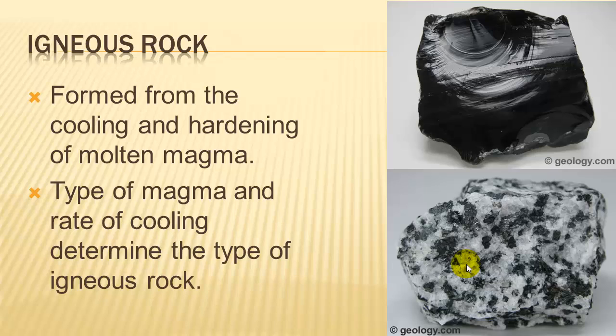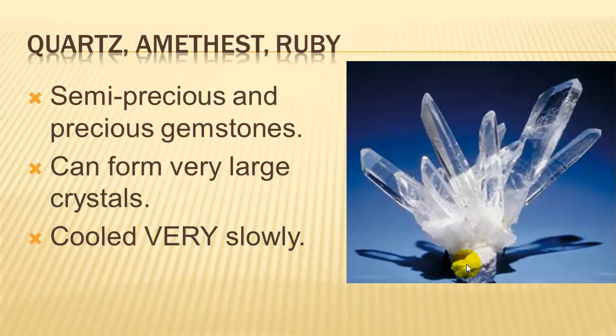There are over 700 different kinds of igneous rocks. Quartz, amethyst, ruby — semi-precious and precious gemstones are igneous rocks because they're so beautiful, and they can form very large crystals as long as they cool very, very slowly.